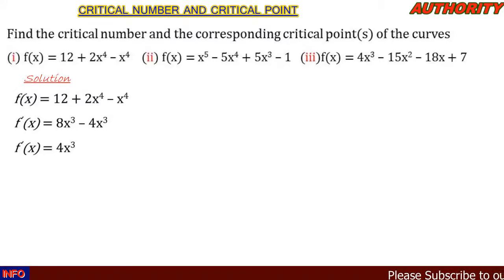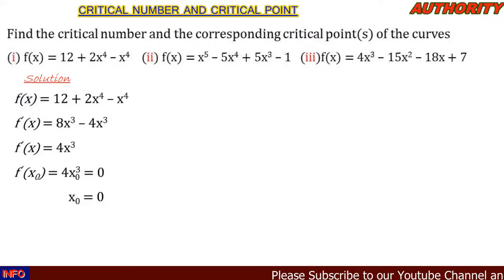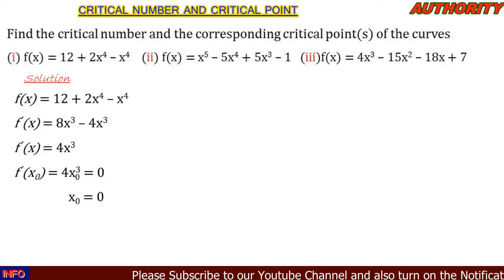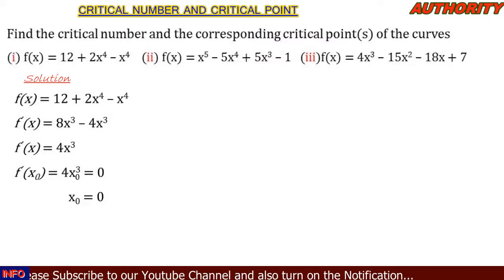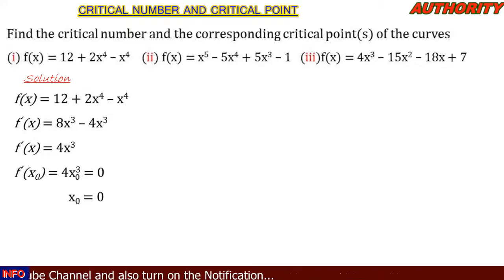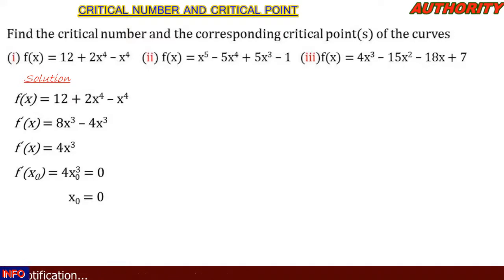Now we replace x with x₀ and set it equal to zero. So f′(x₀) = 4x₀³ = 0. We divide both sides by 4 and take the cubic root, giving us x₀ = 0. So the critical number of f(x) = 12 + 2x⁴ - x⁴ is x₀ = 0.